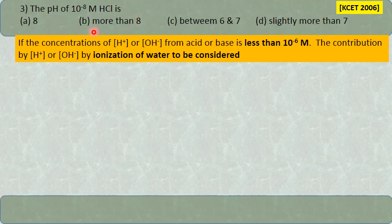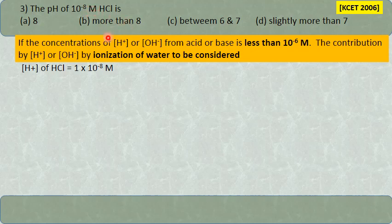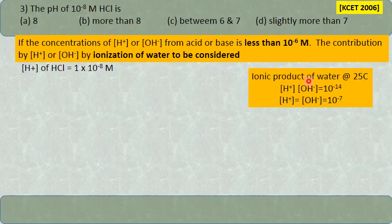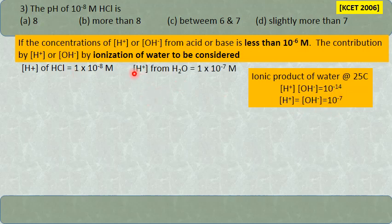The pH is not simply 8 by direct formula. Hydrogen ion from HCl is 10⁻⁸. Amount of hydrogen ion from water ionization: ionic product of water = [H⁺][OH⁻] = 10⁻¹⁴ at 25°C, so [H⁺] from water = 1×10⁻⁷ moles per dm³.